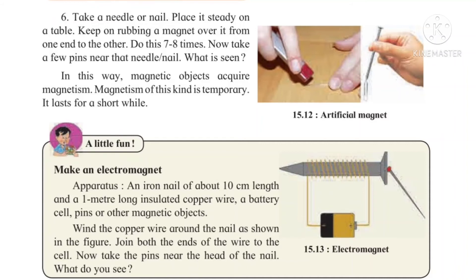Because of the current, the nail generates a magnetic property. As soon as we remove the connection of the wire to the cell, the pins immediately fall off, because the current no longer passes. This is called electromagnetism, and it is not permanent — it is temporary. This property only lasts for as long as the current flows.